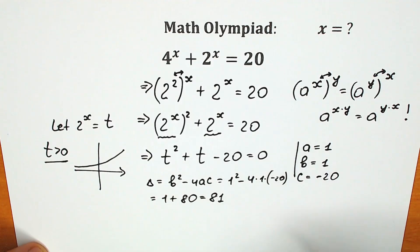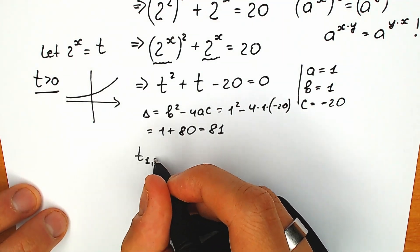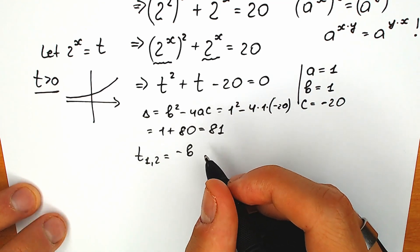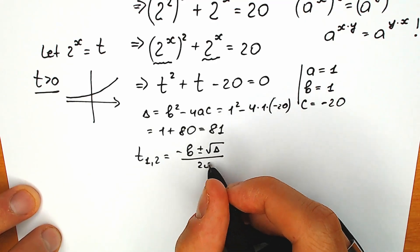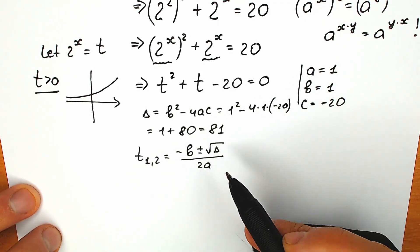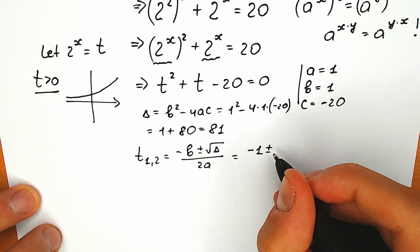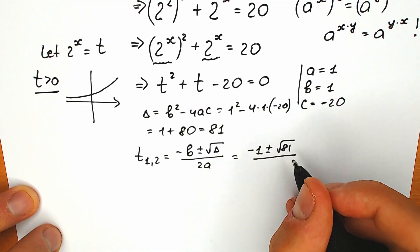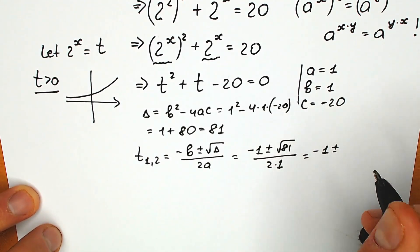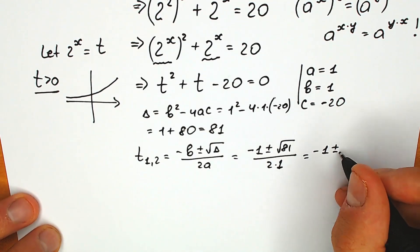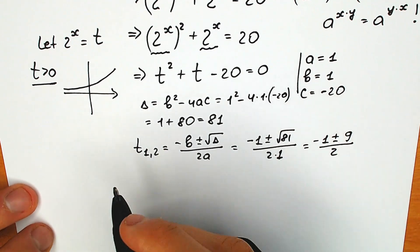We can easily say we have two roots. So t₁ and t₂ equal minus b plus or minus the square root of the discriminant, all over 2a. Let's plug in: minus 1 plus or minus square root of 81 — which is 9 — all over 2 times 1. So we have minus 1 plus or minus 9, all over 2.